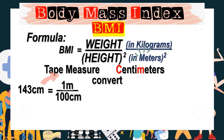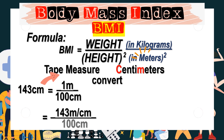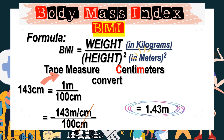We multiply 143 centimeters by 1 meter over 100 centimeters. So 143 centimeters times 1 meter equals 143 meter·centimeter. Then 143 meter·centimeter divided by 100 centimeters — we cancel the same unit, centimeters. 143 divided by 100 gives us 1.43 meters.